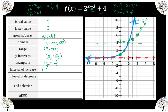Our asymptote is y = 4. For the interval of increase — remember, just like with linear functions, exponential functions are either always going to increase or decrease. End behavior: as x approaches negative infinity, f(x) approaches the asymptote of 4. As x approaches positive infinity, f(x) approaches infinity.